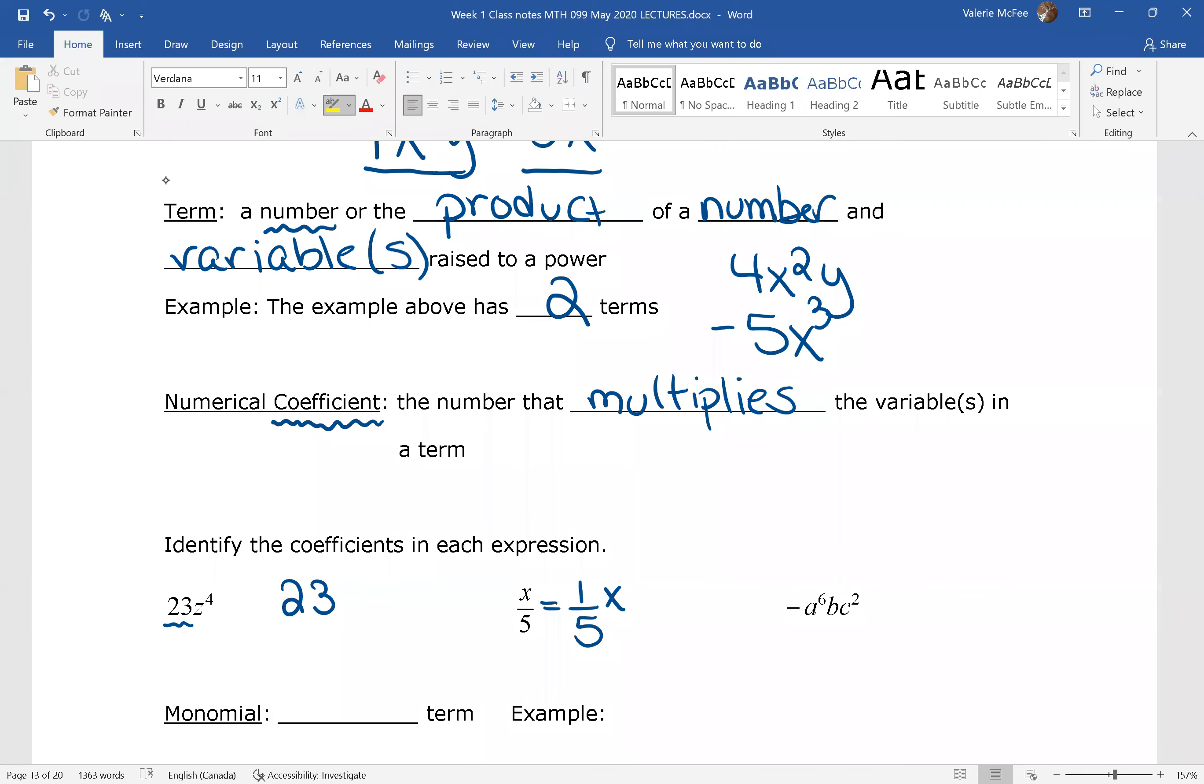Do you understand that this one, x over 5, could be written as 1 over 5 times x? This shows us that the numerical coefficient is 1 over 5. This example could be written as negative 1 times a to the power of 6 b c squared. So we can see again that the numerical coefficient here is negative 1. We'll be asking for the numerical coefficient or just the coefficient in some of the questions that we do more often in math 103.